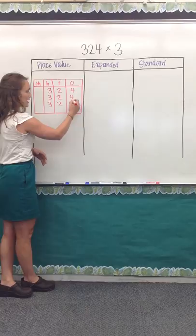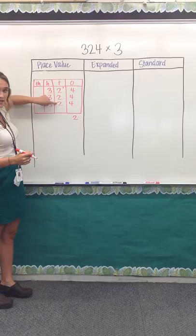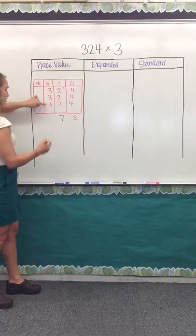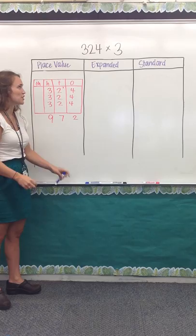And all they have to do is add them up. So we have 4, 8, 12, put the 2, and then carry their 10 up. 2, 4, 6, plus 1 is 7, and then 3, 6, 9. The product is 972.